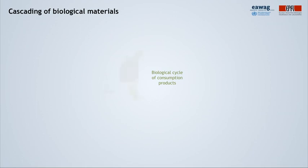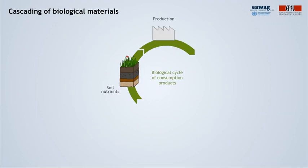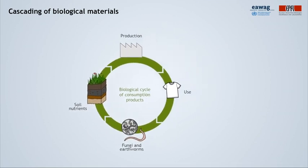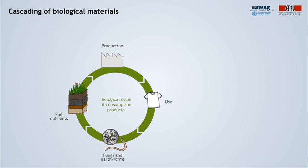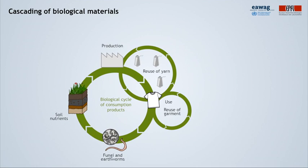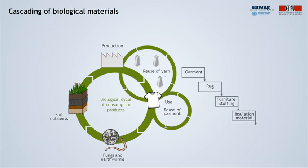Some materials lend themselves perfectly for cascading use. This is usually the case with biological materials — wood and textiles are very good examples. Biological materials can be used in defined cascades, where the quality deteriorates from one application to the next, but both along the way and at the end, the material can be fully returned to the biological cycle with no harm to human health or the environment. At the end, they can be processed by, for example, aerobic composting or anaerobic digestion to recover resources such as organic matter, nutrients, and energy.